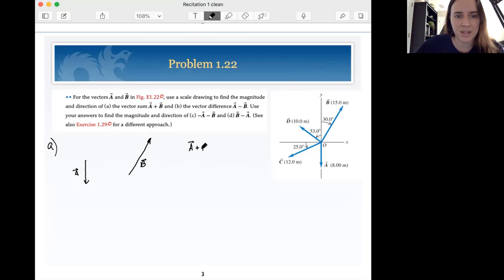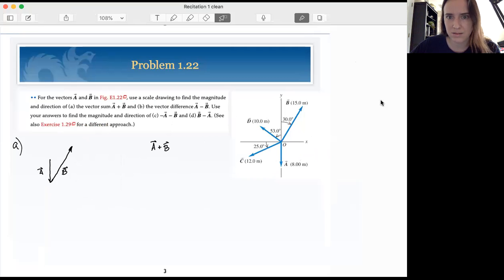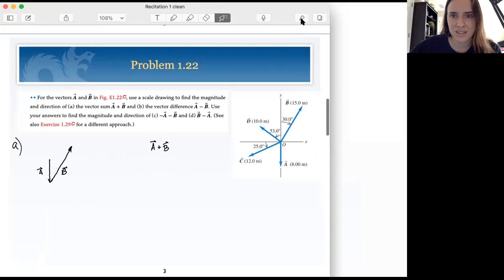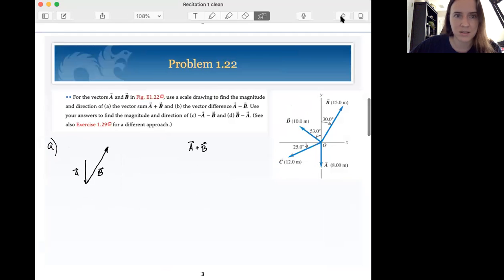Okay, so vector a plus b. So when we are adding vectors together, we take them tip to tail. So we're gonna leave a alone. We're gonna take b. We're gonna take the tail of b and stick it on the end of vector a. And then our resultant.